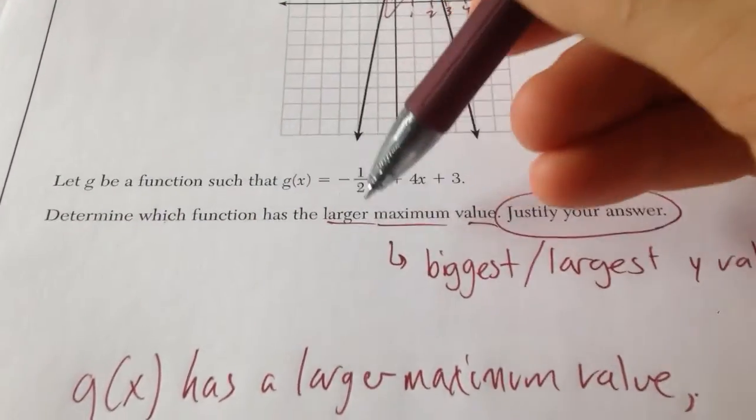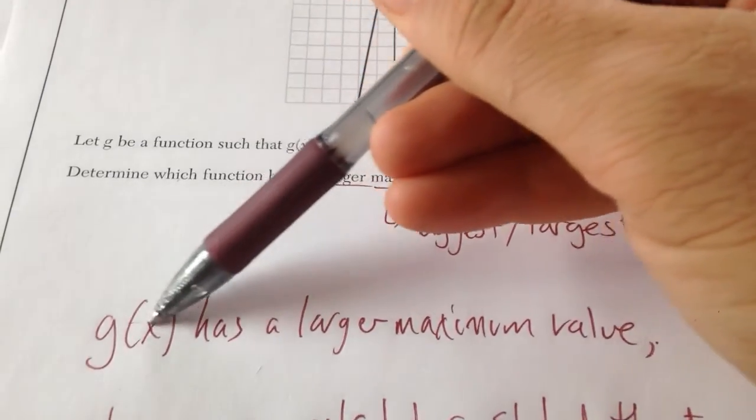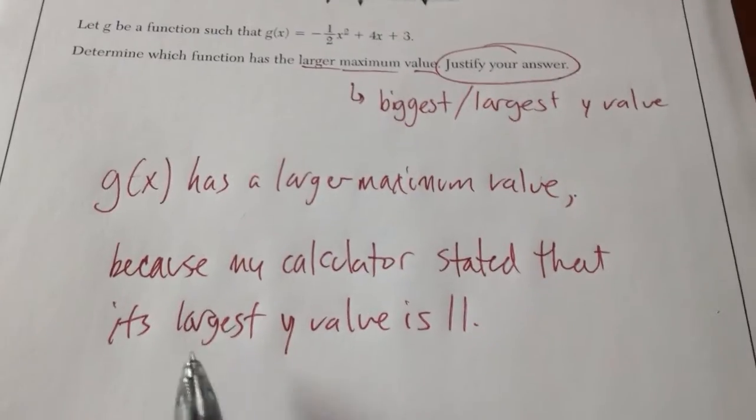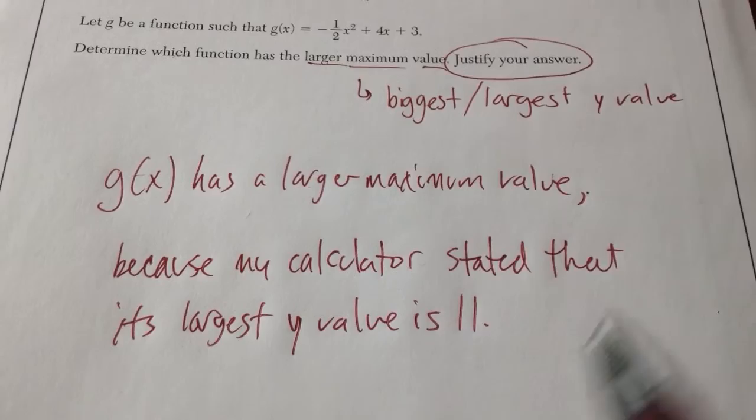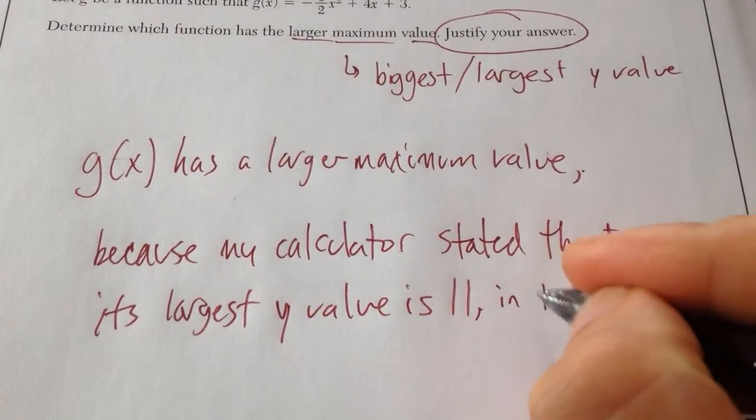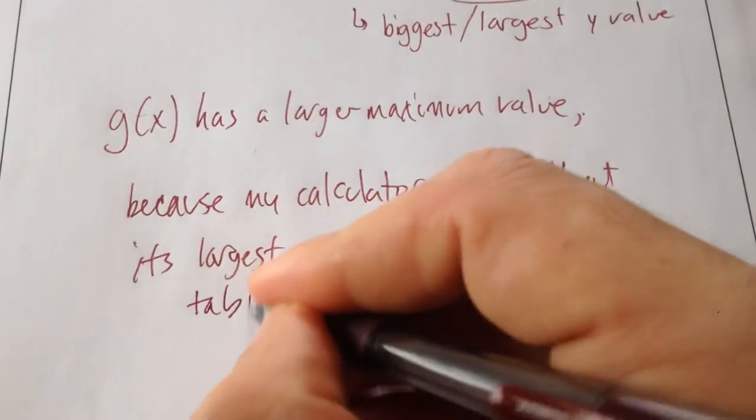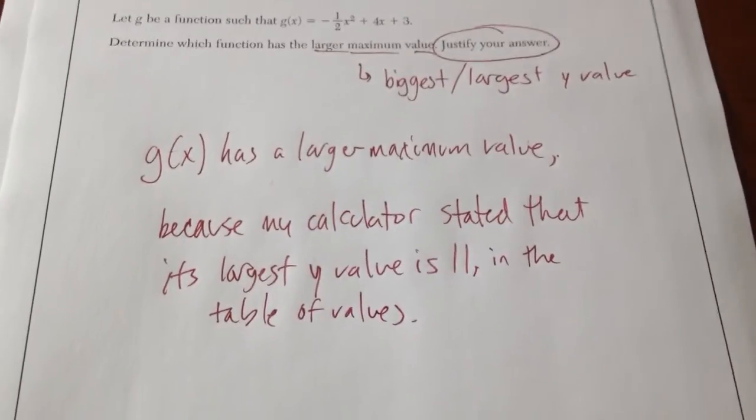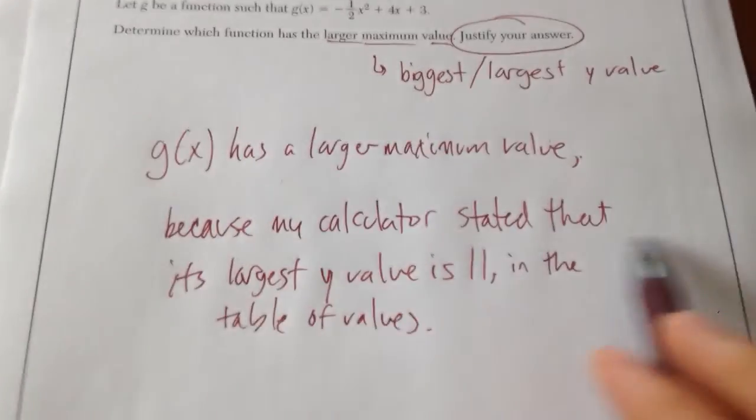Now it says justify your answer. It said determine which function has a larger maximum value. So that means you have to write a complete statement. g of x has a larger maximum value. Justify your answer. Because my calculator stated that its largest y value is 11 in the table of values. This would get you full credit because you've stated your answer and you've explained it.